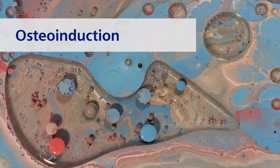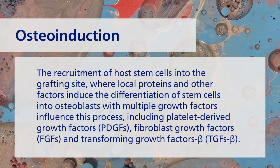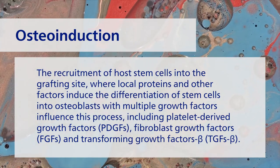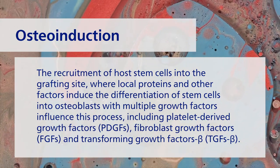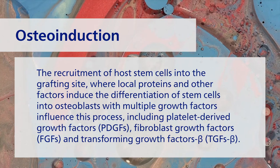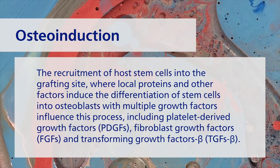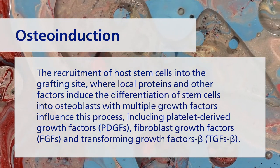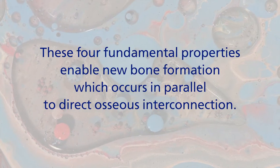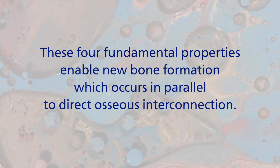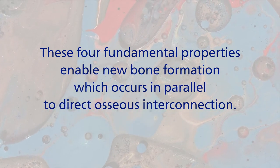Finally, Osteoinduction is the recruitment of host stem cells into the grafting site, where local proteins and other factors induce the differentiation of stem cells into osteoblasts. Multiple growth factors influence this process, including platelet-derived growth factors, fibroblast growth factors, and transforming growth factors beta. These four fundamental properties enable new bone formation, which occurs in parallel to direct osseous interconnection.